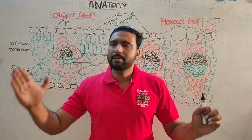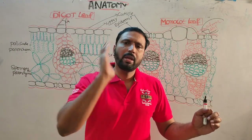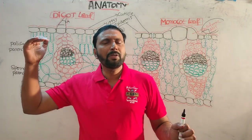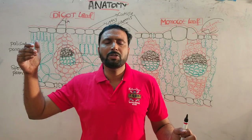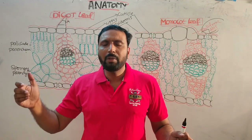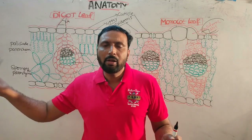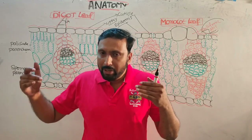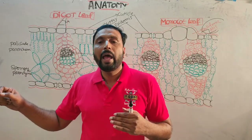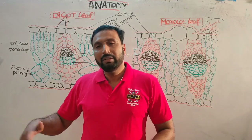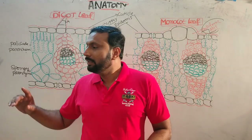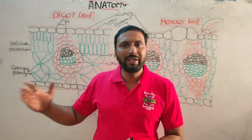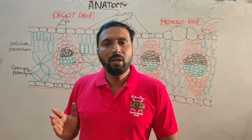Final comparison summary for roots: no difference in epidermis, exodermis, or general cortex. In endodermis, dicot root has fewer passage cells, monocot root has more. Pericycle acts as cambium only in dicot root enabling secondary growth. Dicot root is tetrarch, monocot root is polyarch. Medulla is poorly developed in dicot root and well developed in monocot root.